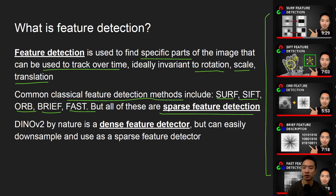One of the main things about DINOv2 is that by nature it's going to be a dense feature detector. But we can easily downsample it to make it a sparse feature detector, since it's easy to go from dense to sparse, but not the other way around.